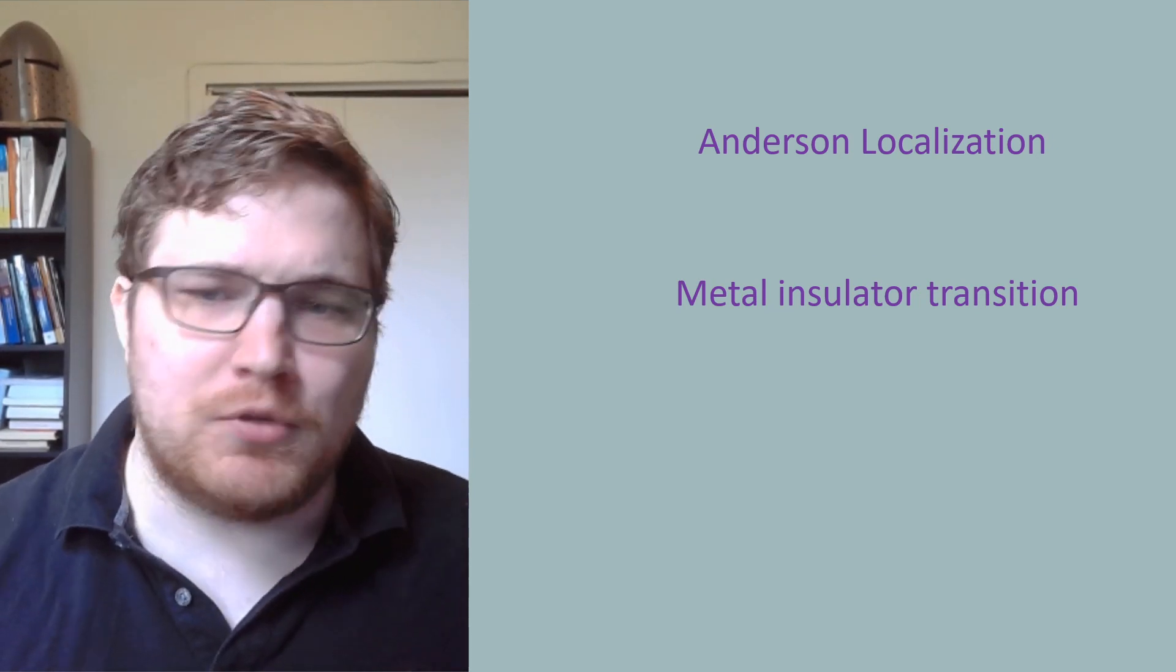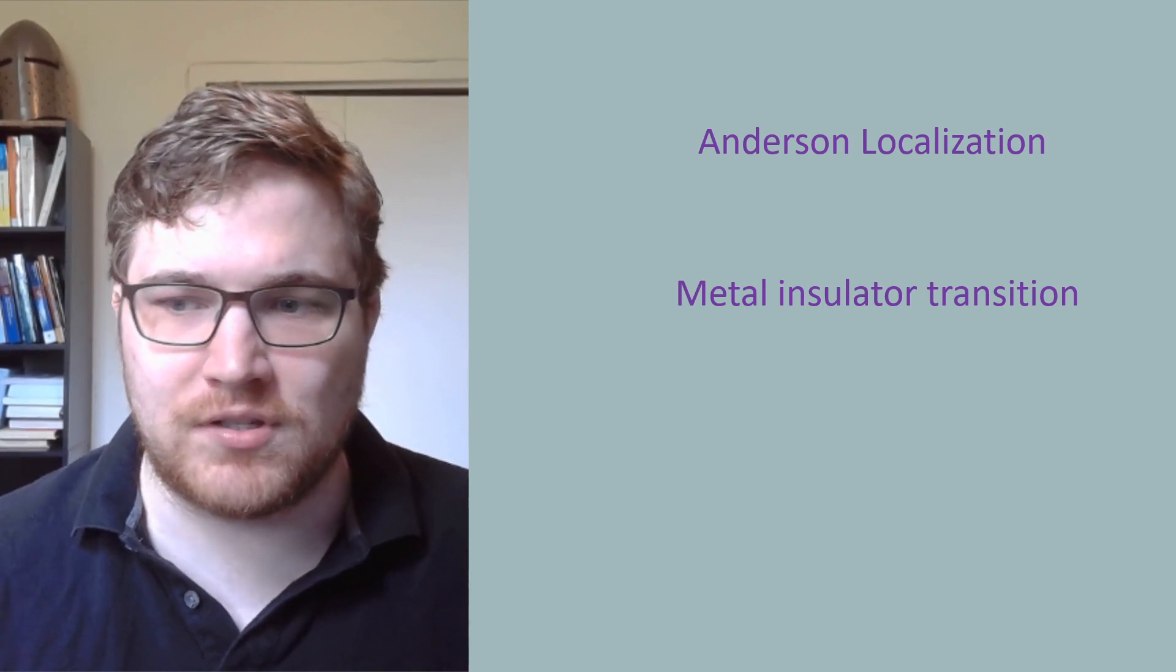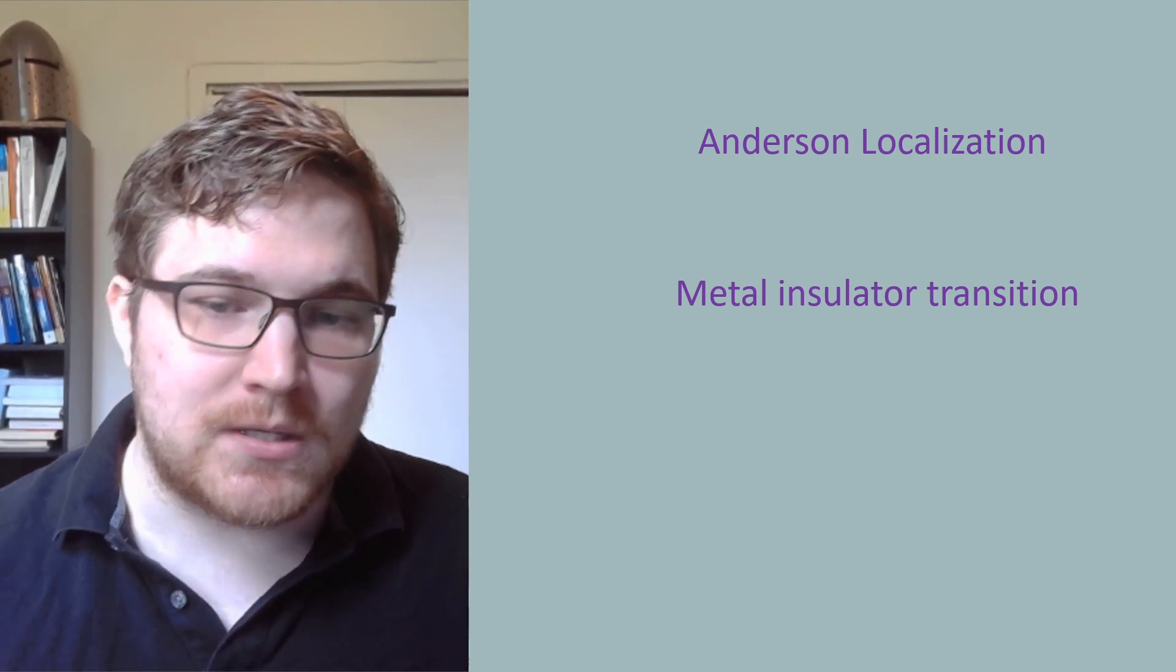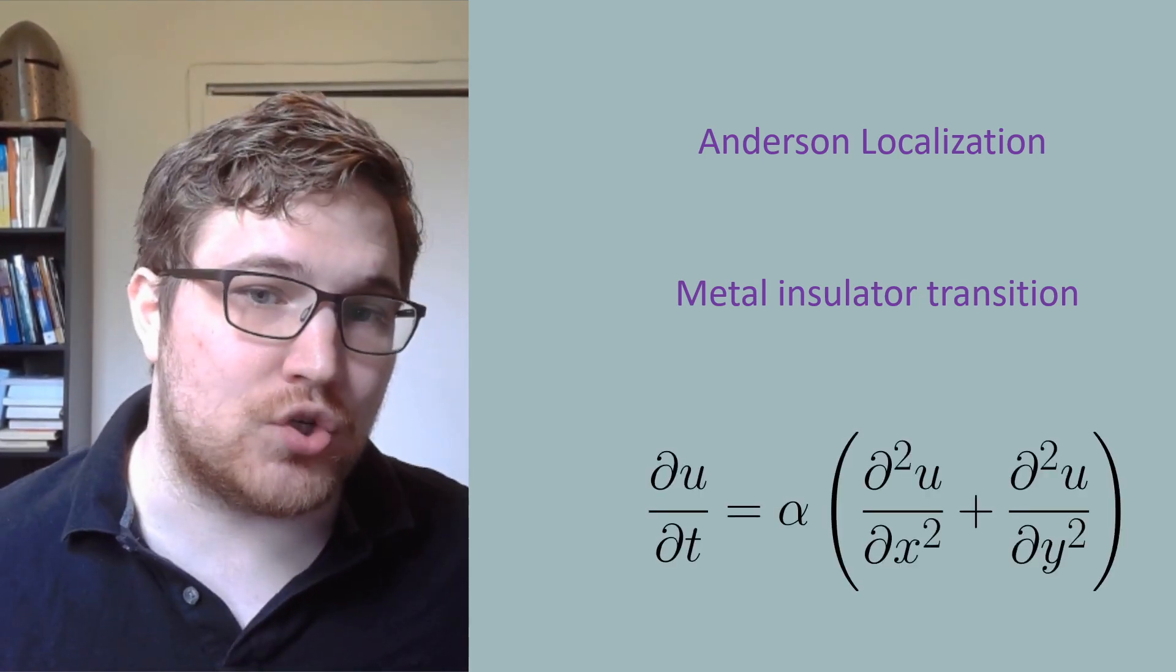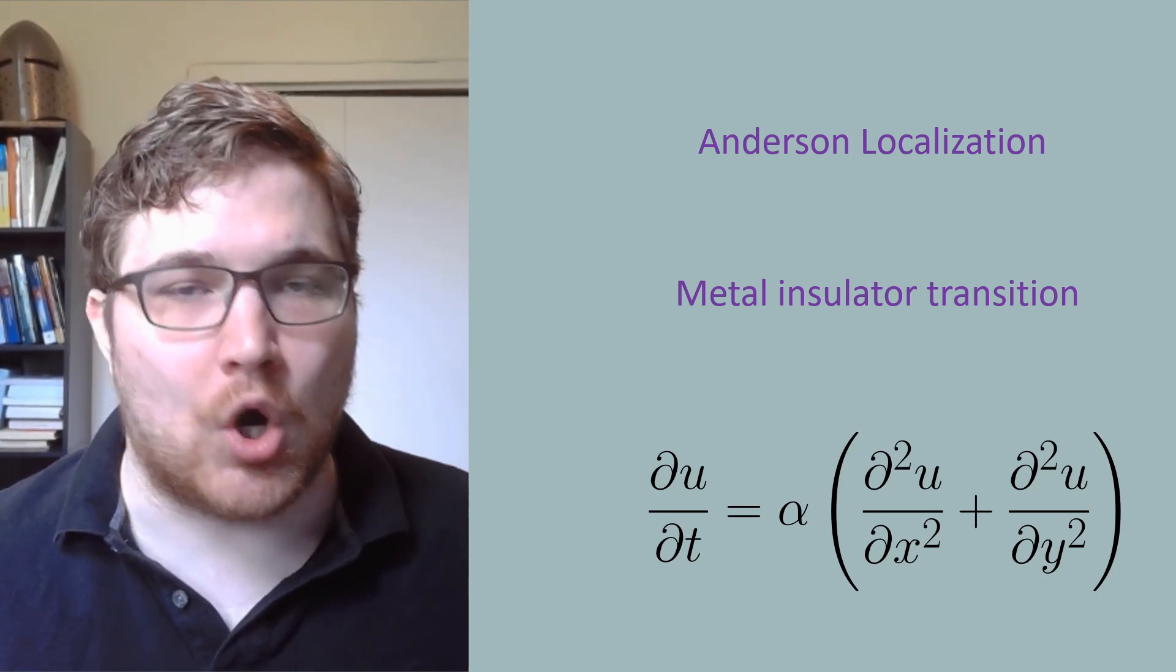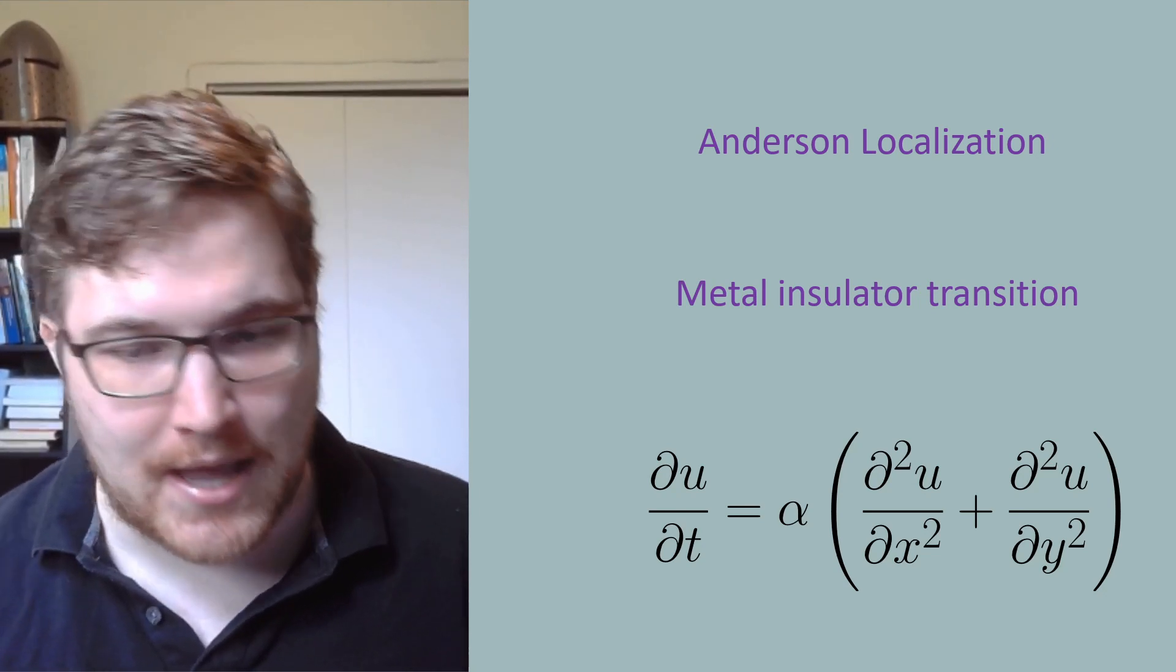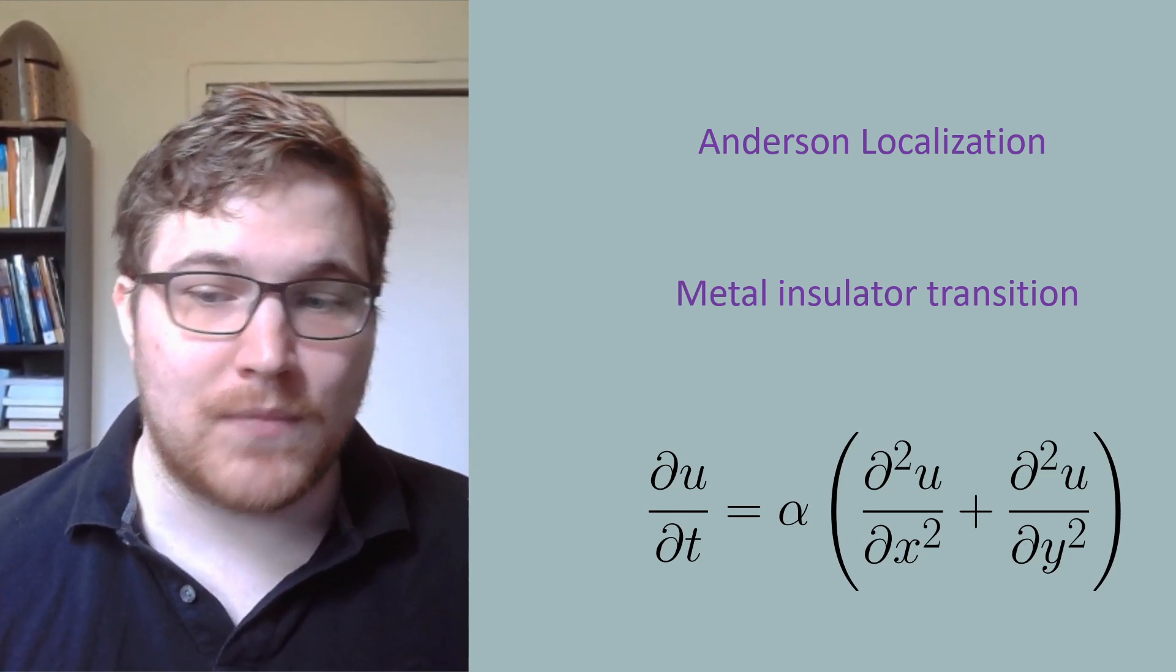Before we jump into a conversation about breaking statistical mechanics, let's first discuss what we generally expect to happen when we assume statistical mechanics is valid. The standard way of seeing this might be to study the so-called heat equation. This equation describes heat flow in a homogeneous and isotropic medium, where u is the temperature at a specific point in space and time. Alpha here is a positive constant called the thermal diffusivity of the medium.